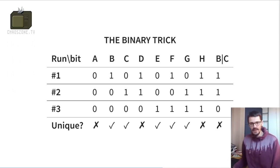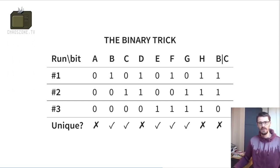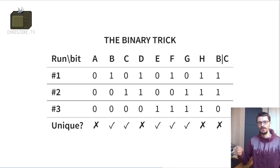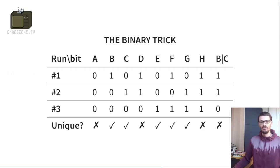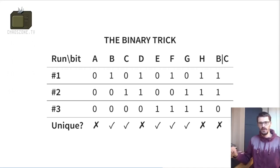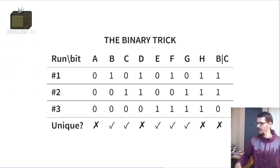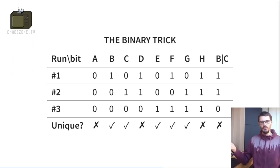Another problem is that some bits have complex relations to a single feature you're tweaking — it might not be a one-to-one relation. A simple example is B OR C conflicting with D, so you can't tell D apart. This shows up in IO banks: every side of the FPGA has an IO bank which you can turn on or off. If you use the binary trick, this bank will always be on and you'll never figure out what those bank bits are.